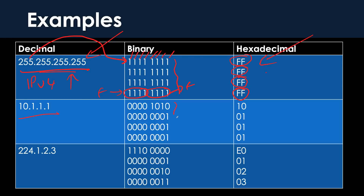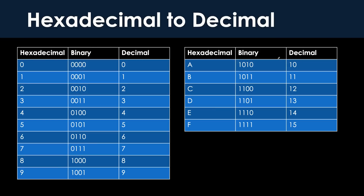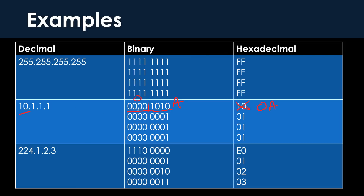This IP address looks like this in binary. For example, 10.1.1.1 — taking the first octet 10: in binary that's 00001010. Split it down the middle: the lower four bits are zero in hex, and 1010 is A in hex, so the first octet is 0A. One in decimal split down the middle is 01 in hex. And for the last octet, split the binary in half and work out the decimal values for each group of four bits to get the hexadecimal equivalent.